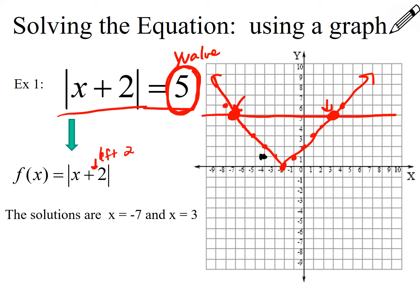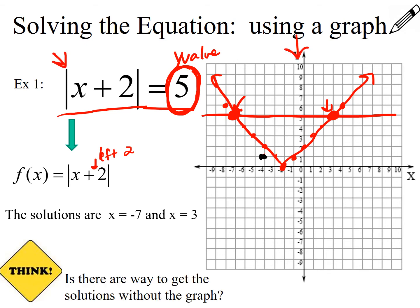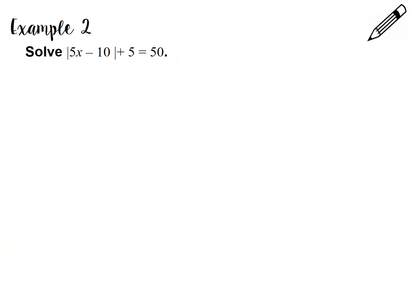That's what's going on graphically when we ask for the solution for x in this equation. We want to think: is there a way to solve these equations without graphing every single time? The answer is yes, and we're going to talk about that. We can still think back to the V-shape of the absolute value graph — it has a negative side and a positive side, where we're going to have two solutions for x.